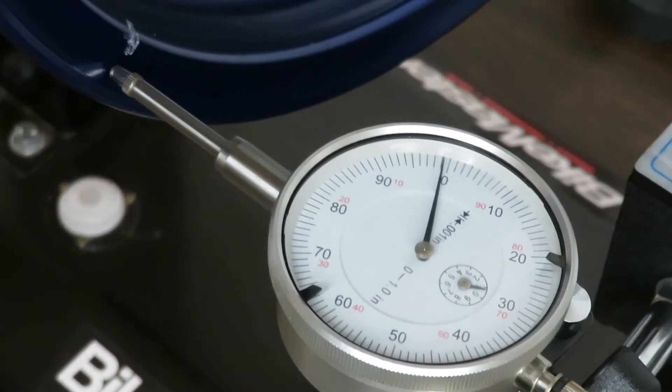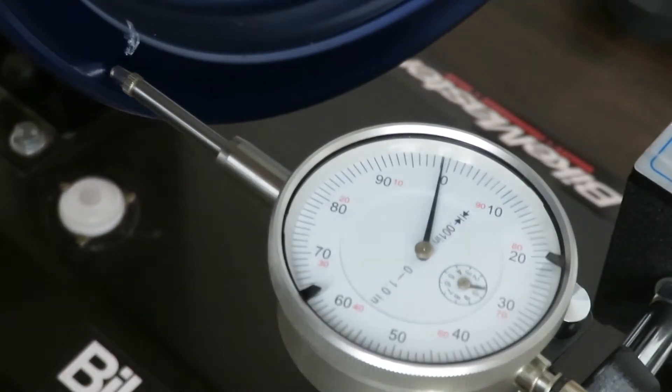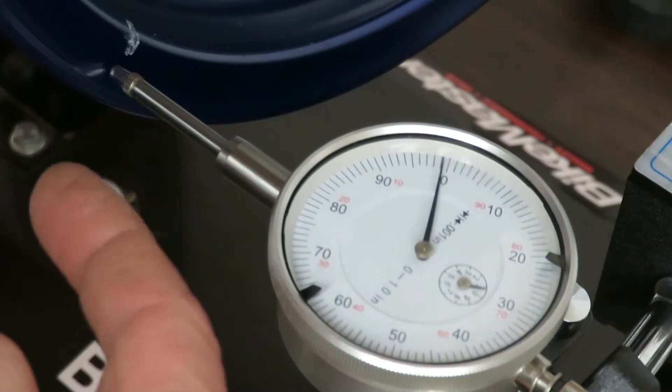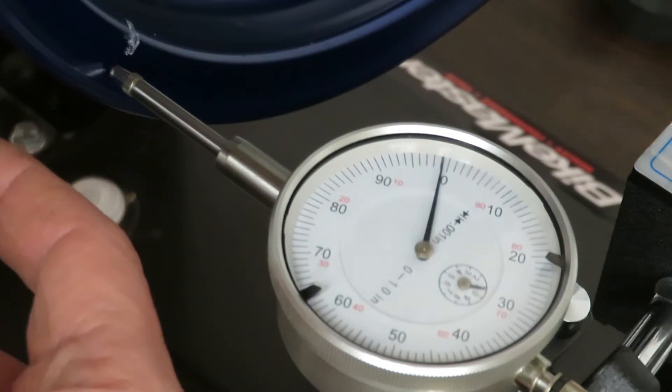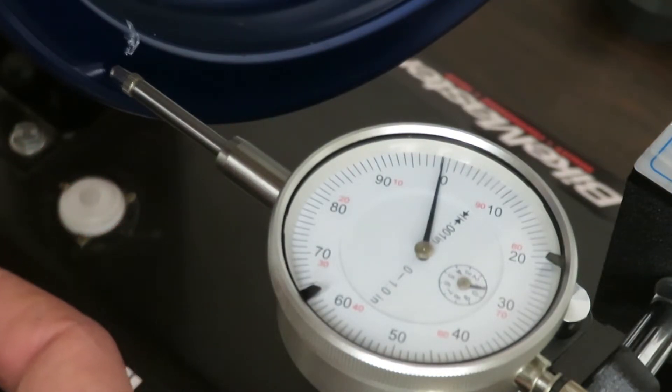So now we have the dial gauge set up to measure the axial runout. And you'll want to adjust the dial gauge with the stand and the mounting hardware so that the shaft of the dial gauge is as parallel as possible to the axle.